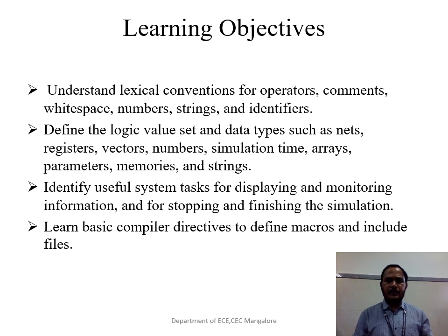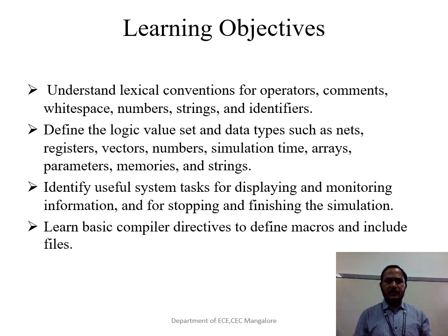The learning objectives of this chapter are: understanding the lexical conventions for operators, comments, white space, numbers, strings, and identifiers; defining the logic value set and data types such as nets, registers, vectors, numbers, simulation time, arrays, parameters, memories, and strings; identifying useful system tasks for displaying and monitoring information, and stopping and finishing simulation; and learning basic compiler directives to define macros. The focus is on how to declare these — not how to use them.